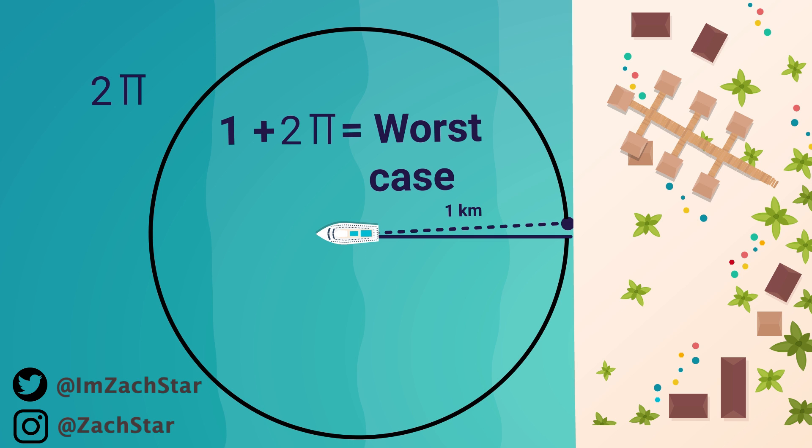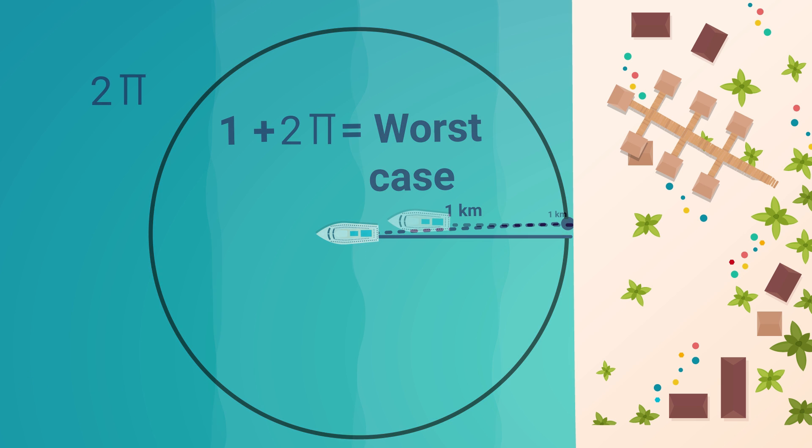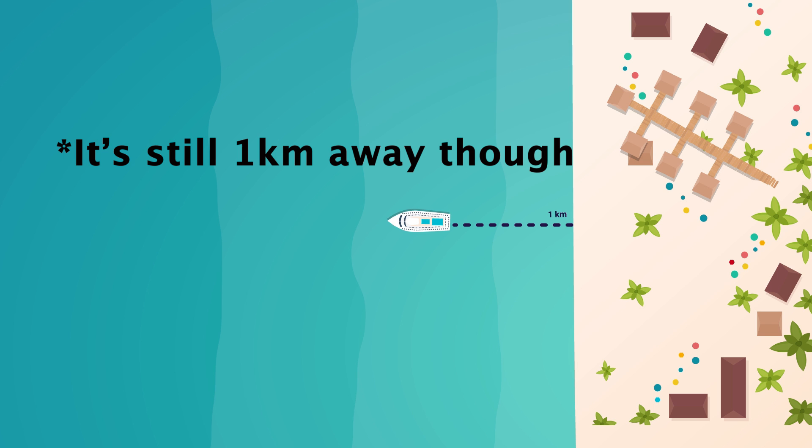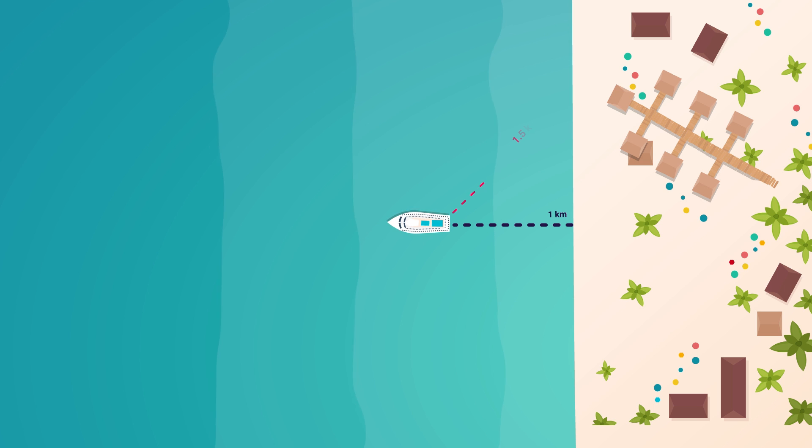We can do something else where the worst case scenario is less than one plus two pi. To show this, I got to bring the boat closer to the shore. And to summarize the method, we're simply going to drive further in the beginning. I'll say 1.5 kilometers for now.